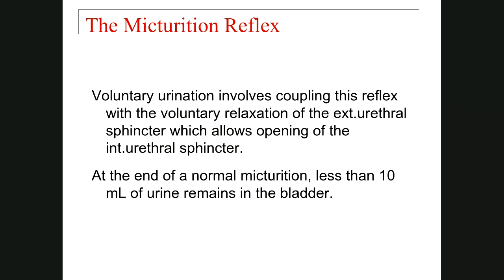For the micturition reflex, there are two processes. First, the external urethral sphincter, which is under voluntary control, must open. After that, the internal urethral sphincter opens and we can do urination. At the end of urination, about 10 milliliters of urine remain in the bladder. Urine is acidic by nature, and this acidity prevents the growth of bacteria in the urinary bladder.